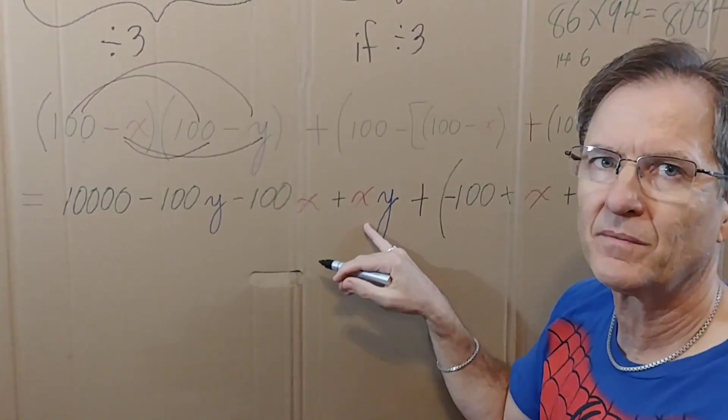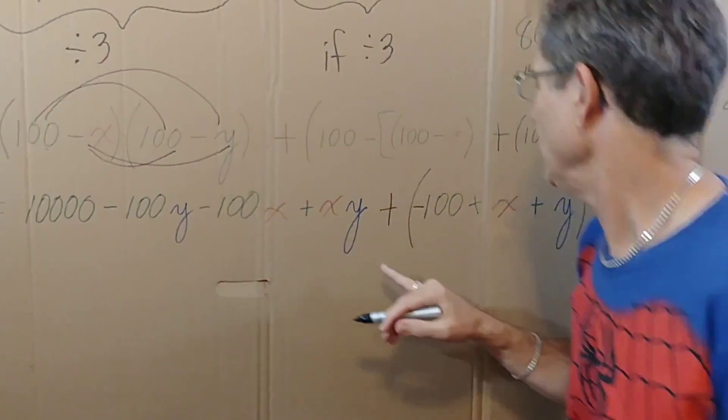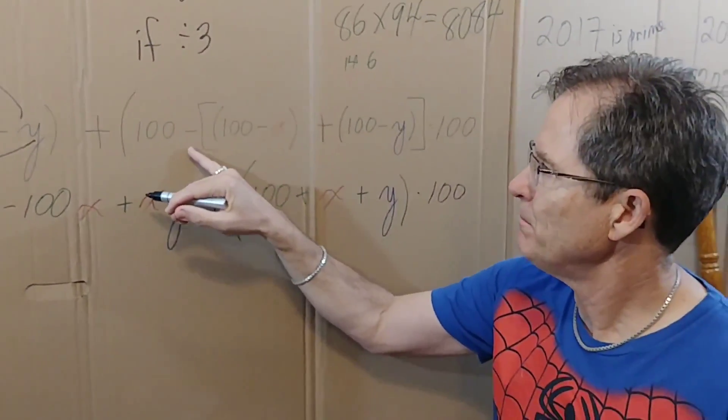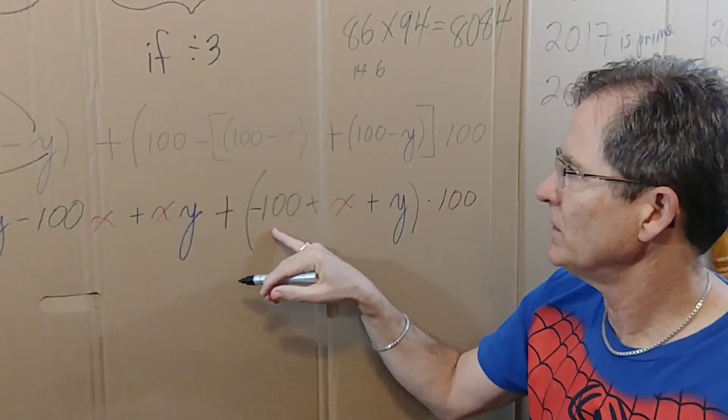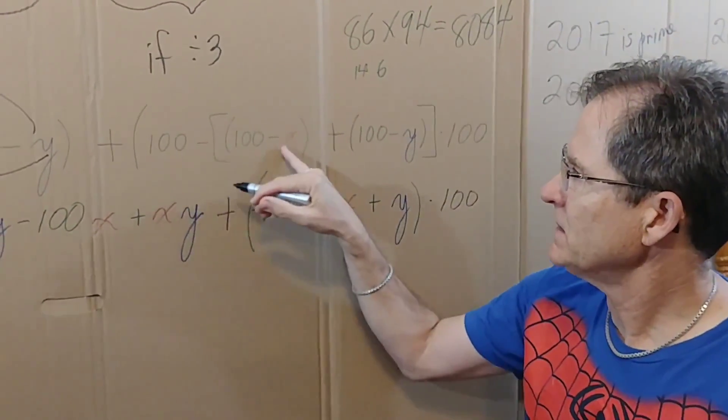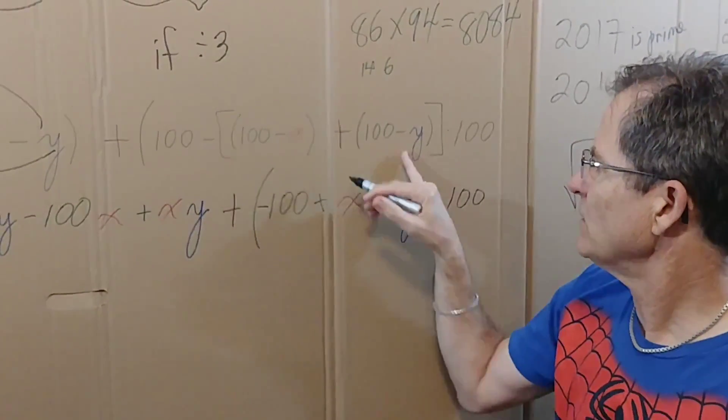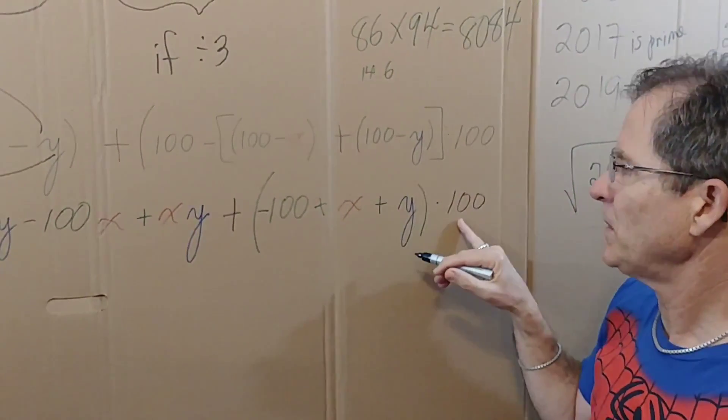And then if you simplify the second part, you get 100 minus 100 minus another 100, so minus 100. Minus negative x is x, minus negative y is y. Don't forget we still have to multiply by 100.